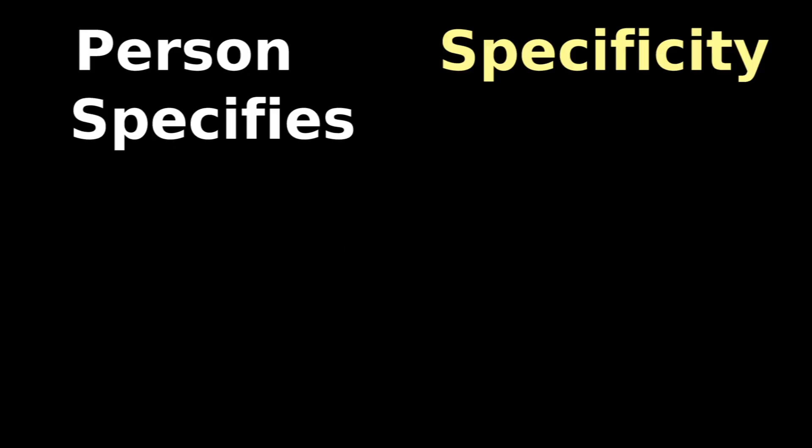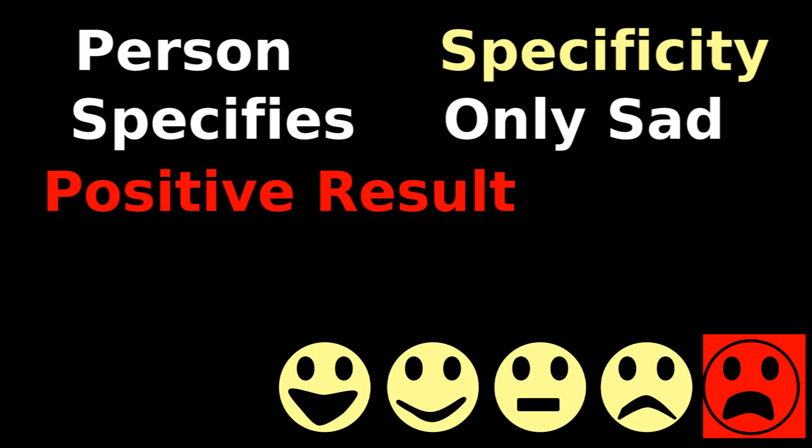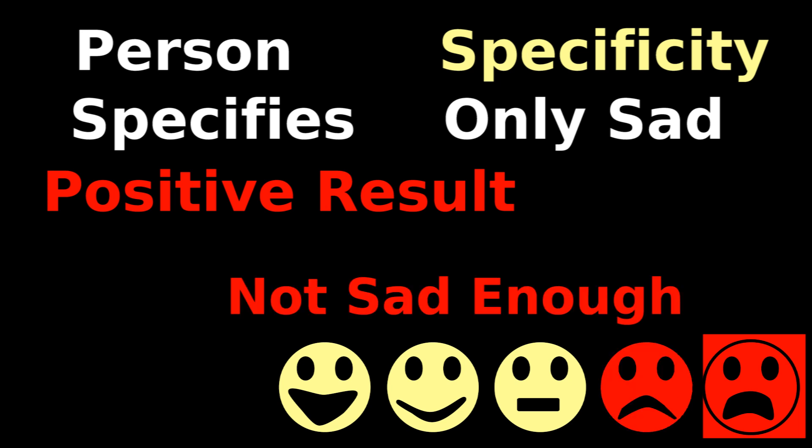A specific person specifies only sad patients. Amongst these five patients, only this obviously sad person will be specified as positive. However, while this patient is actually sad, he's not sad enough, so the test misses him and he is a false negative.